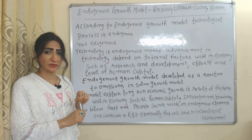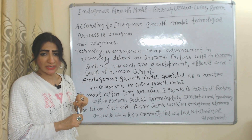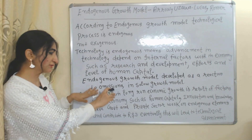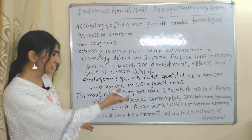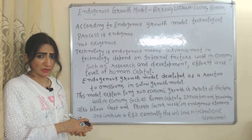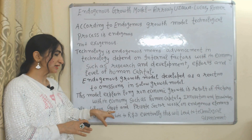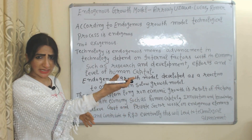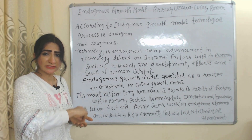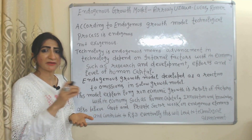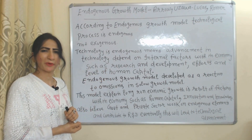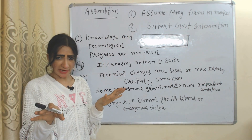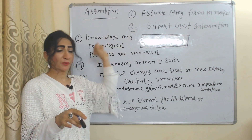This model explains that long-run economic growth depends on internal factors within the economy like human capital, innovation, and knowledge. It also explains that government and the private sector work as endogenous elements and contribute to research and development, eventually leading to technological progress.